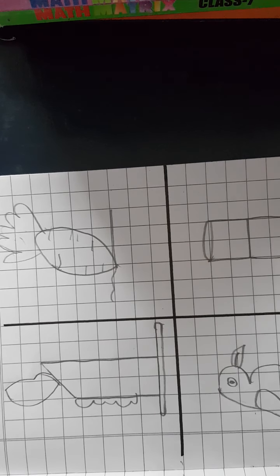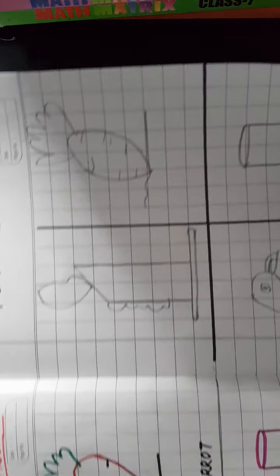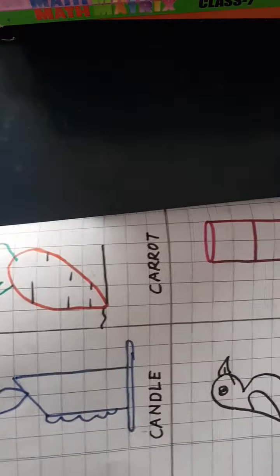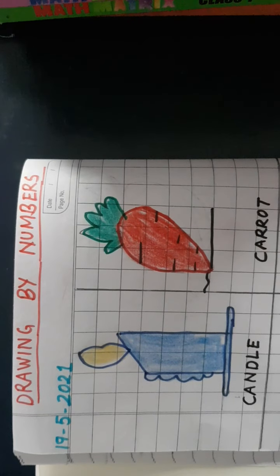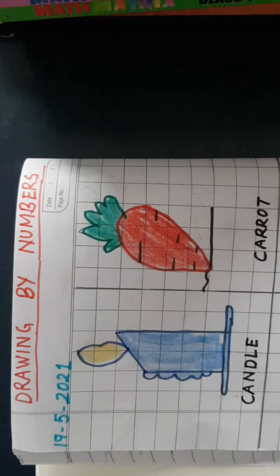Ab hum isme par outline karenge. Outline vaise to hum black color se karna chahiye. Lekin main ne pehle hi isko karke rakha hua hai different colors se. Aur iski baad mein, ab isme colors apne according fill kar sakte hain. Aur isi tarike se hum isme rang bhare lenge. To dekhi kitne beautiful pictures ready hain, sirf numbers se.